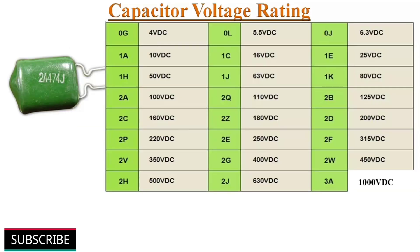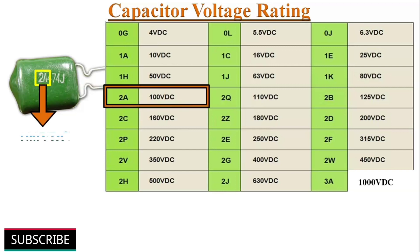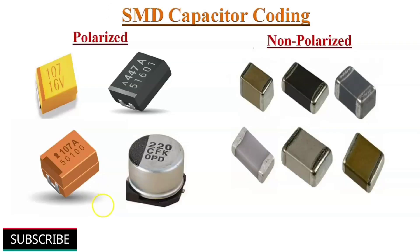If a capacitor is marked with 2A474J, the first two digits 2A indicate the voltage rating and can be decoded from a table. According to the EIA standard voltage rating table, 2A is a 100 volt DC rating. If 2C is printed on the capacitor surface, then its voltage rating is 160 volts DC.